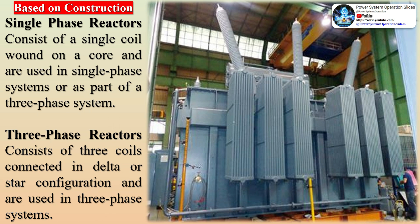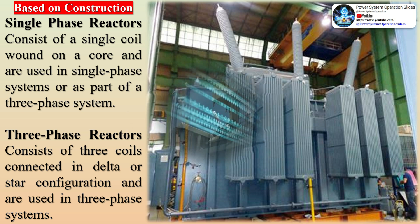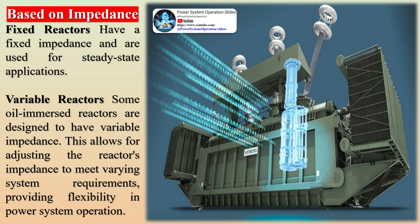The total current flowing through the reactor is determined by the difference between the applied voltage V and the induced voltage E, divided by the resistance R of the coil, as described by Ohm's law. When connected to a bus or line, a shunt reactor behaves as an inductive load, drawing current to supply both active and reactive loads.